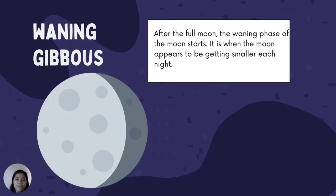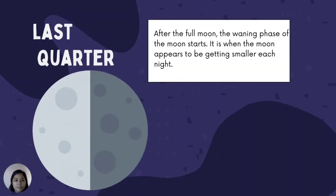Waning Gibbous: After the full moon, the waning phase of the moon starts. It is when the moon appears to be getting smaller each night. Last Quarter: After the full moon, the waning phase of the moon starts and the moon appears to be getting smaller each night.